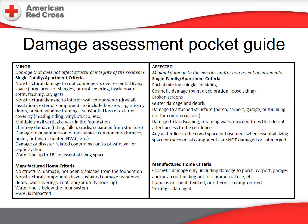Minor for homes or apartments represents damage that does not affect the structural integrity of the residence. This can include non-structural roof damage over living areas and damage to interior walls, doors, etc. Water in the home up to 18 inches in an essential living area is considered minor. Minor for manufactured homes includes no structural damage; however, windows, doors, and wall coverings may have sustained damage. The key word is structural.